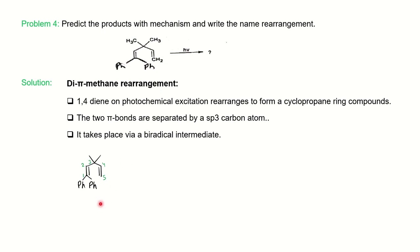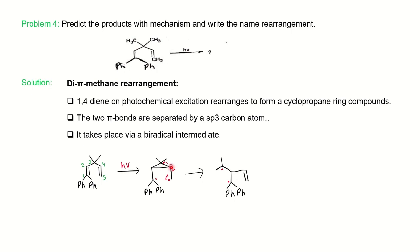The rearrangement takes place via a biradical mechanism. Under photochemical conditions, a free radical is formed on the double bond. Carbon-2 and carbon-4 form a bond, leaving behind a carbon bearing two phenyl groups as a free radical and a primary free radical — this is the biradical intermediate. The primary free radical, being less stable, rearranges and forms a double bond after opening of the cyclopropane ring. This generates a more stable tertiary free radical, and the two stable free radicals then form a bond, giving the cyclopropane ring compound as the final product — the 1,4-diene has rearranged to the cyclopropane product.